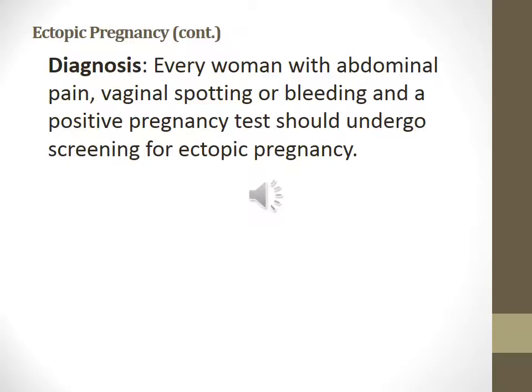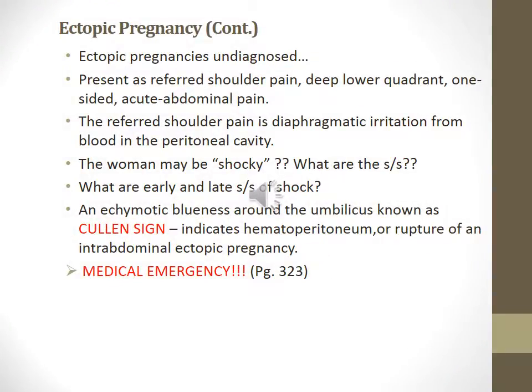Every woman with abdominal pain, vaginal spotting, or bleeding and a positive pregnancy test should undergo screening for ectopic pregnancy. She should have a quantitative beta-hCG level and transvaginal ultrasound. Beta-hCG levels of 1,500 to 2,000 should show a visible pregnancy by ultrasound. If beta-hCG levels are 1,500 to 2,000 but there is no visible normal uterine pregnancy by ultrasound, ectopic pregnancy should be considered. An undiagnosed ectopic pregnancy may present as referred shoulder pain or deep lower quadrant one-sided acute abdominal pain. The referred shoulder pain is from diaphragmatic irritation from blood in the peritoneal cavity. The woman may present in shock. An ecchymotic blueness around the umbilicus, known as Cullen's sign, indicates hemoperitoneum or rupture of an intra-abdominal ectopic pregnancy — this is a medical emergency.